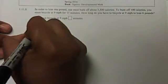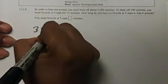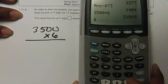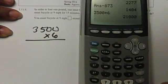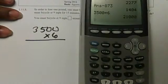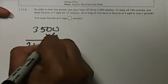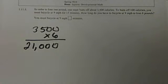So that would be 3,500 times 6. So we see that we have to lose 21,000 calories. We have to burn off 21,000 calories to lose just 6 pounds.